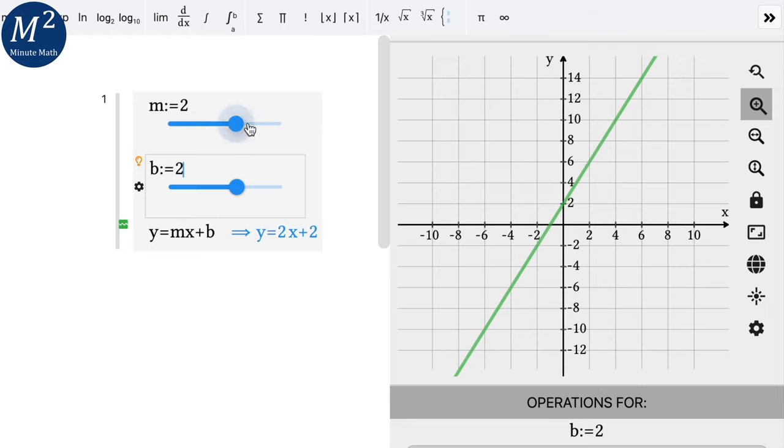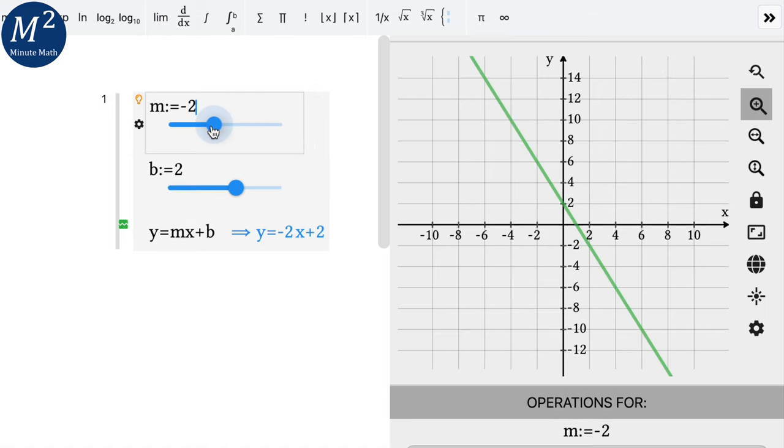If our slope is negative two, what happens? We still have the same y intercept right here at y equals 2 or y value of 2. But our slope is a negative 2.